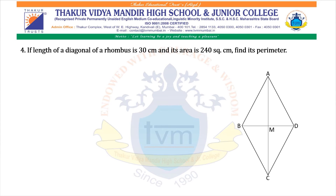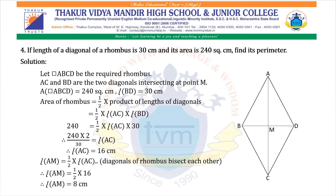Question 4: If the length of a diagonal of a rhombus is 30 cm and its area is 240 square centimeters, find its perimeter. Solution: Let quadrilateral ABCD be the required rhombus. AC and BD are the two diagonals intersecting at point M. Area = 240 cm², BD = 30 cm. Area = half into AC into BD, so 240 = half into AC into 30. Therefore, AC = 240 into 2 divided by 30 = 16 cm.